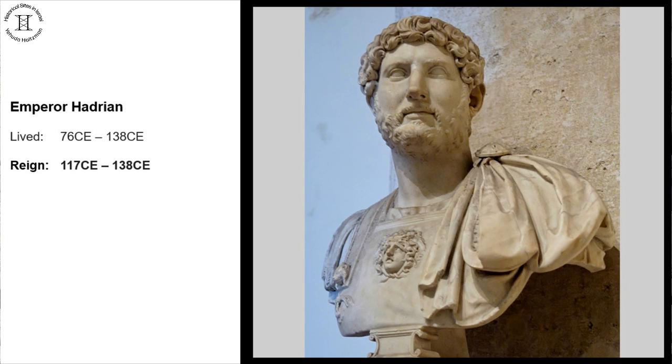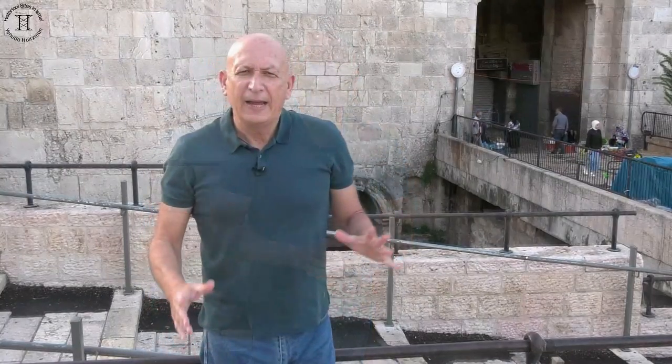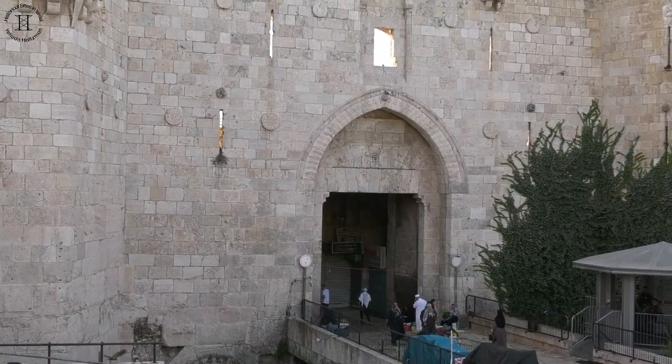It is important to remember that although Emperor Adrian's reign is considered one of the most prosperous during the Roman emperors, he is the one who suppressed the Bar Kokhba revolt in the year 135. In the suppression of the revolt, hundreds of thousands of Jews lost their lives. His decree, among other things, prohibited the entry of Jews into Jerusalem. Emperor Adrian turned Jerusalem into a pagan city called Ilia Capitolina.